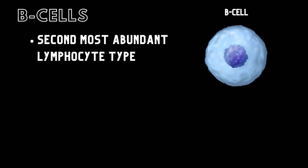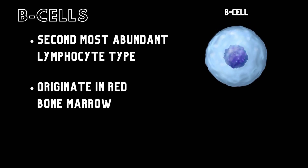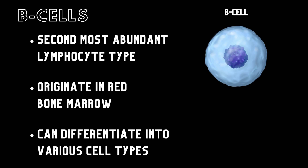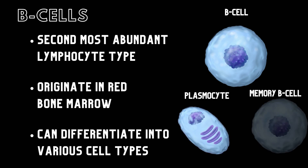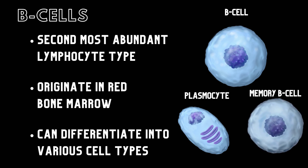B cells are the second most common type of lymphocyte. These cells originate in red bone marrow. Immunocompetent B cells can divide into two primary forms: plasma cells, or plasmacytes, which secrete antibodies; and memory B cells, which remain dormant until they encounter the same antigen again.